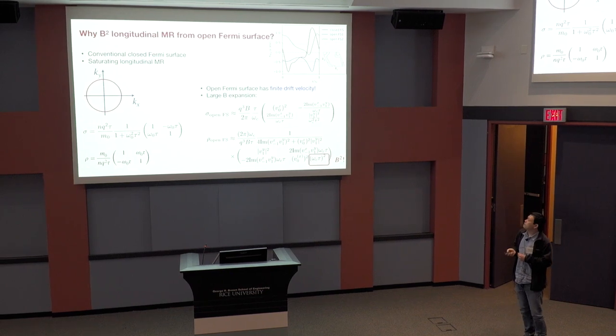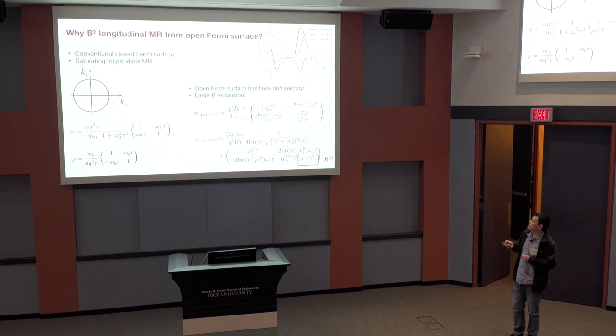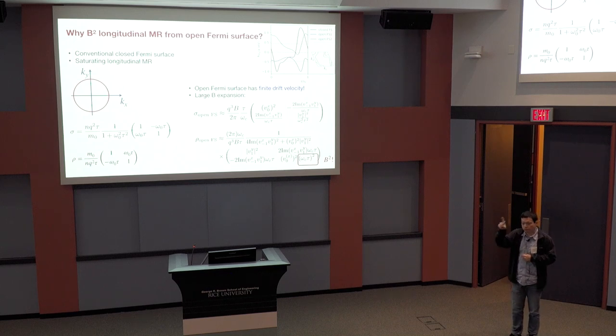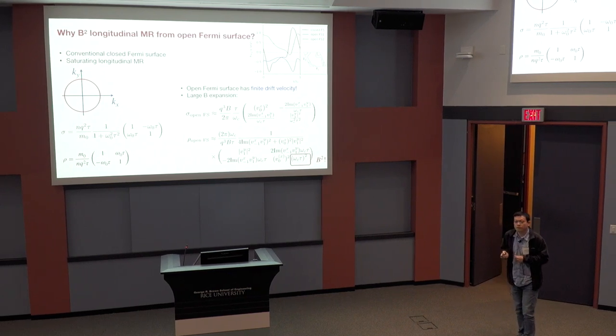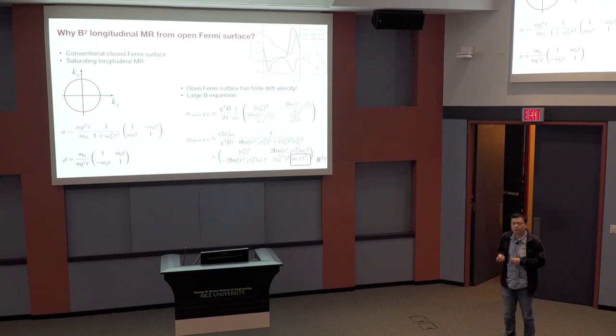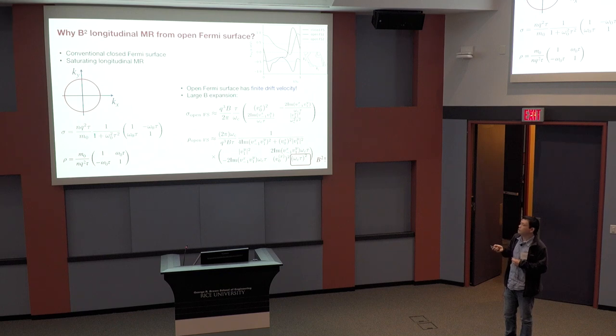So because of the finite drift velocity, the main difference, qualitative difference compared to the conventional case, is that we have a term that's not suppressed by this due to the magnetic field bending of the trajectory. And so that will be the only term that's actually different compared to the conventional scenario. And then inverting this matrix, we get this b-squared magnetoresistance along one of the directions. And along the direction with the finite drift velocity, it's a saturating magnetoresistance.